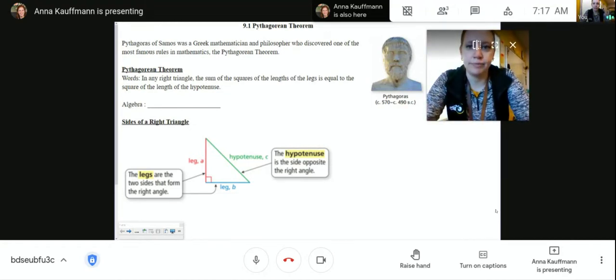9.1 Pythagorean Theorem. Pythagoras of Samos was a Greek mathematician and philosopher who discovered one of the most famous rules in mathematics, the Pythagorean Theorem.